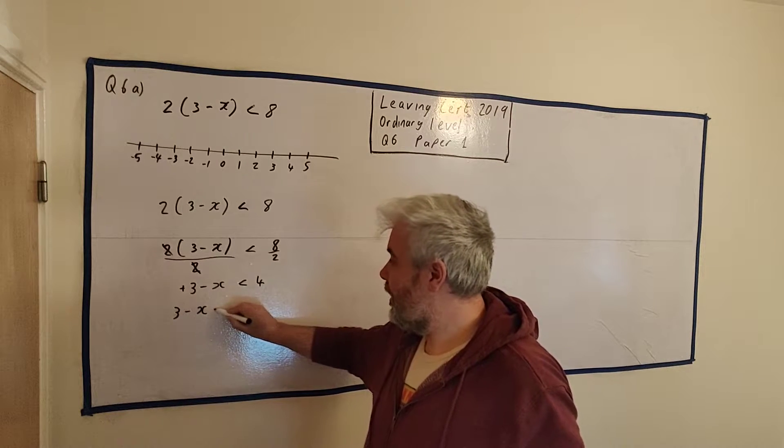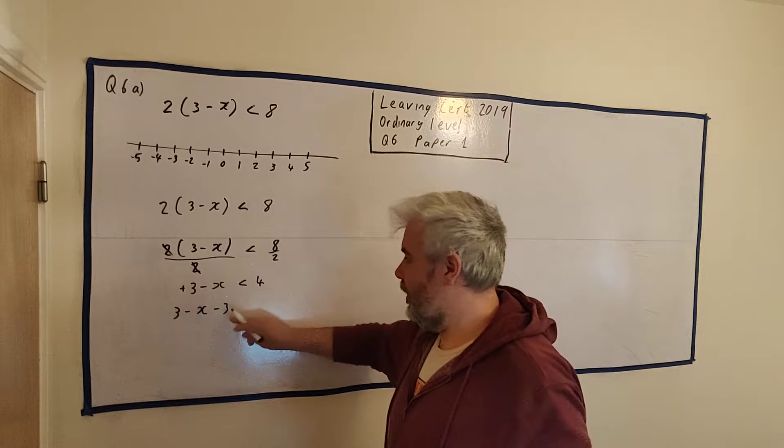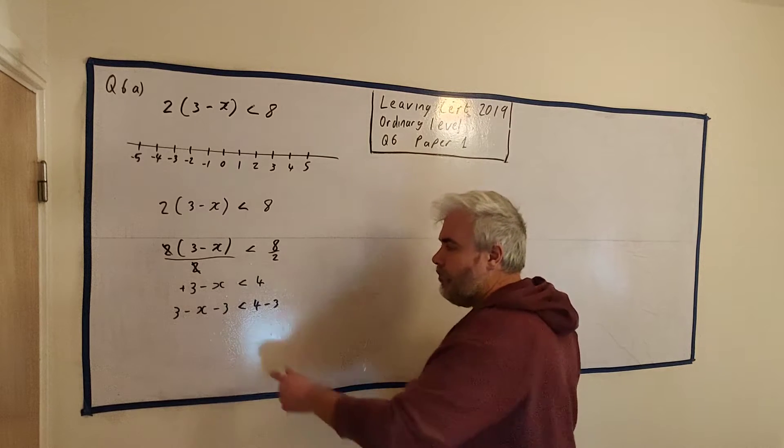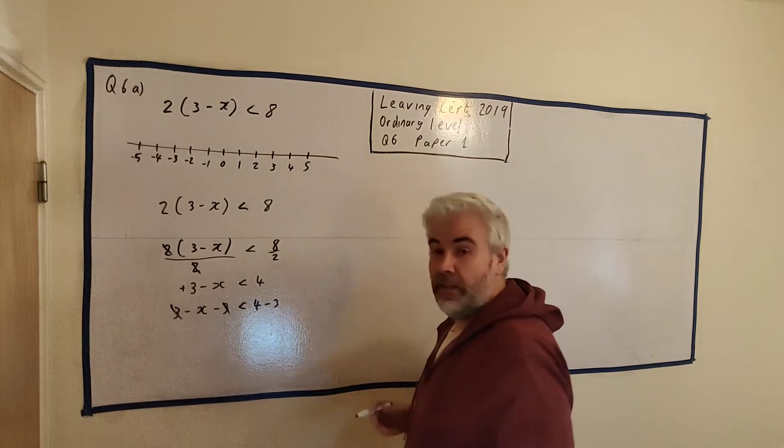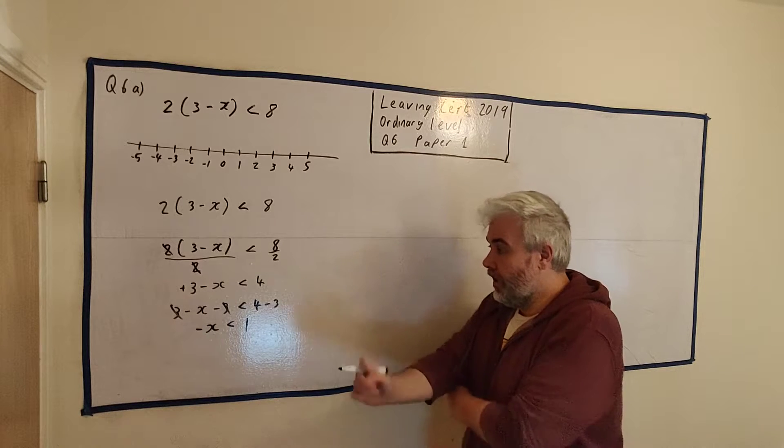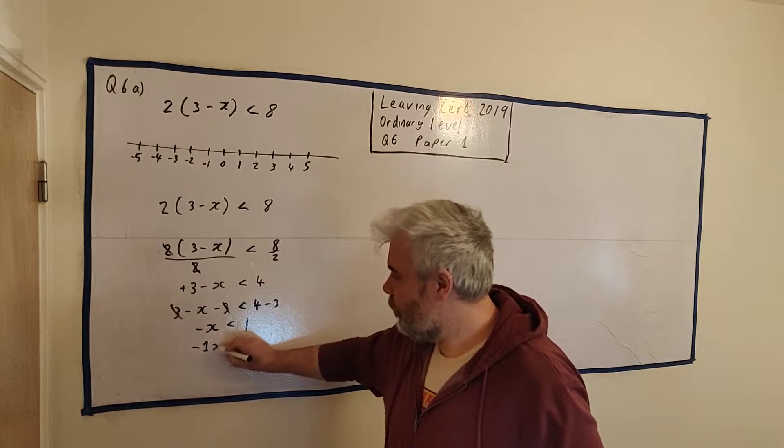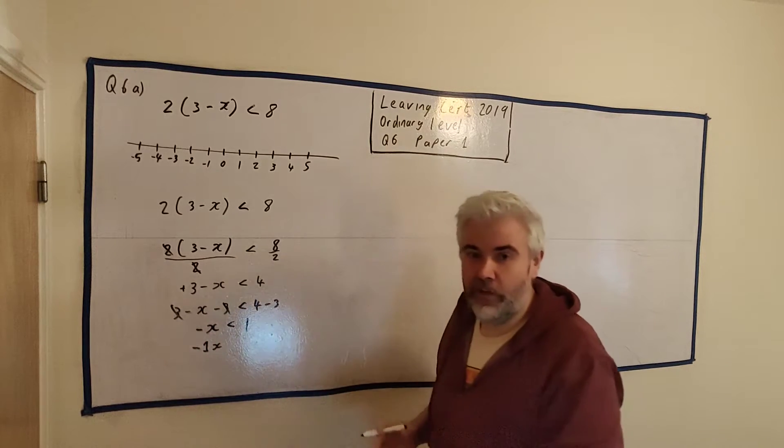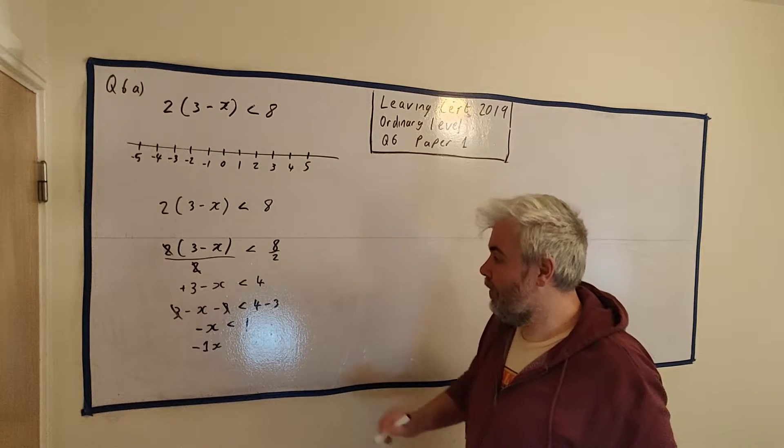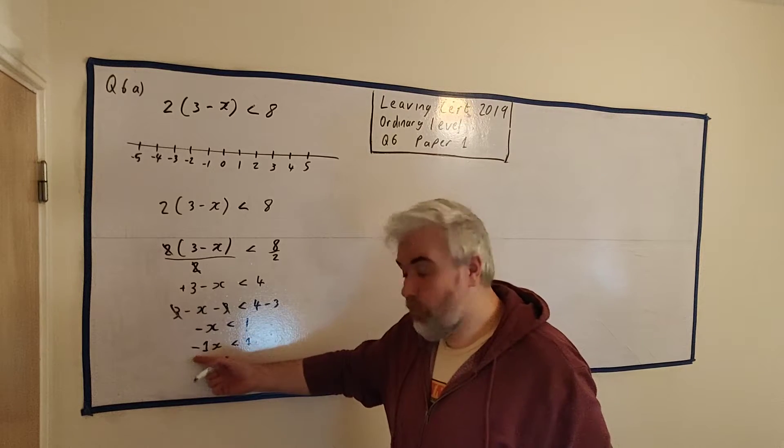3 minus x minus 3. If I take 3 away from everything on the left and everything on the right, 3 take away 3 leaves me 0. So we're left with -x < 1. Nearly finished. So we don't want minus x. Just to not confuse some people, there's always a 1 there. People are confused by these minuses. It's -1. That's a number in front of that x. We just don't bother writing 1s all the time.